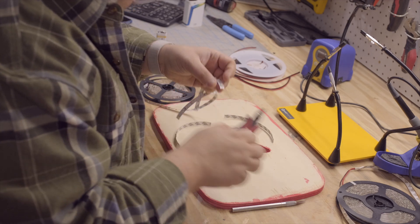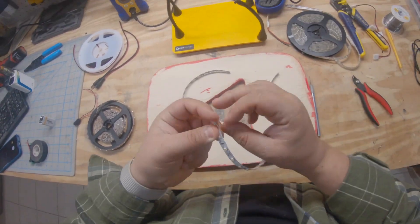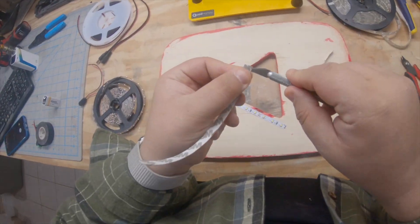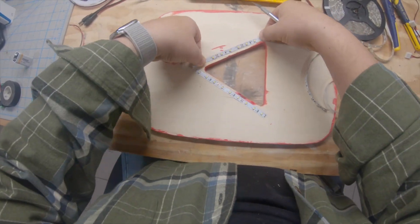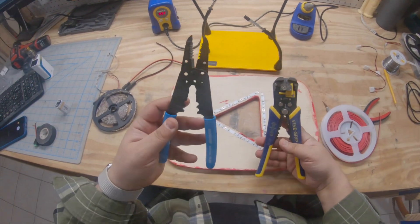What we're doing here is cutting three strips to go on the inside edge of the triangle and then we're going to cut small pieces of wire and connect them all together so the one battery connection lights up all three strips.